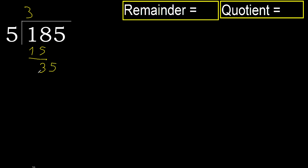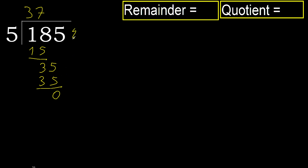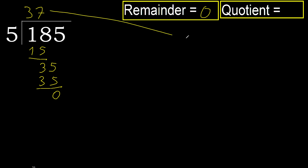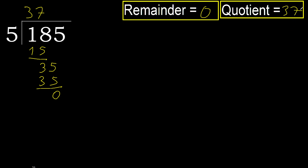Next, bring down 35. 5 multiplied by 7 is 35, which is not greater. Subtract 0. Next, there is no number, therefore finish it.